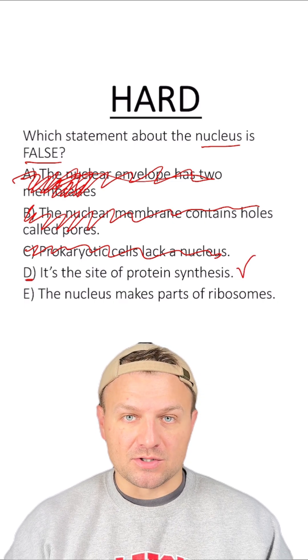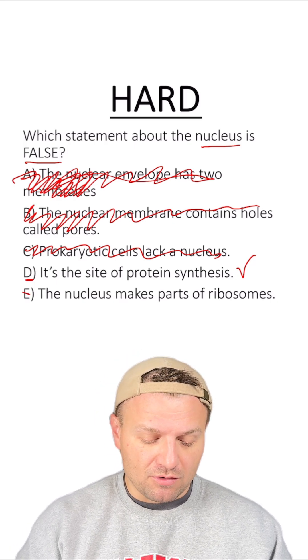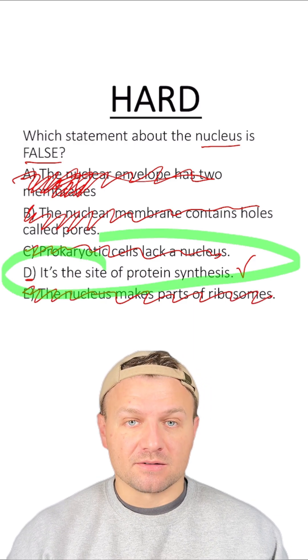Option E: the nucleus makes parts of ribosomes. We just went over that. It makes rRNA which makes up a ribosome. So that is not the answer. Which means D here is the correct answer.